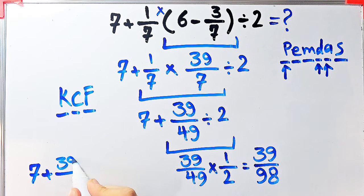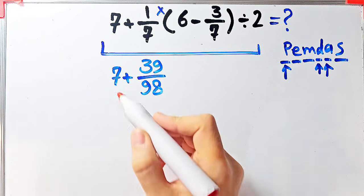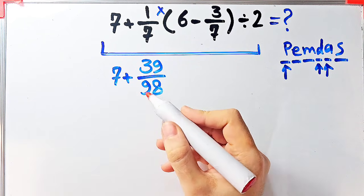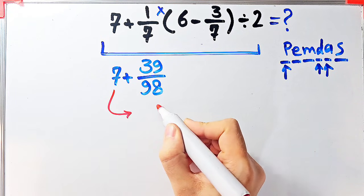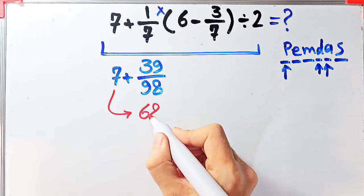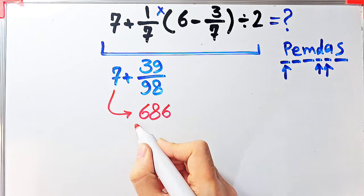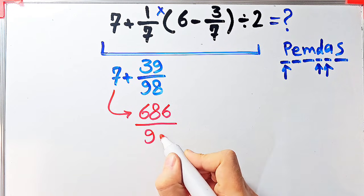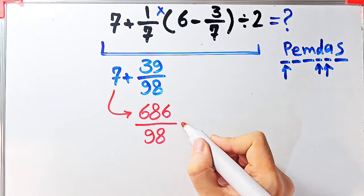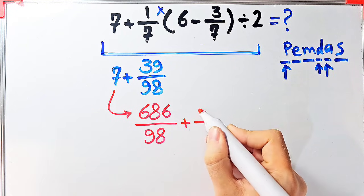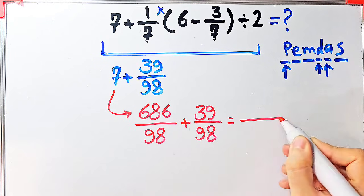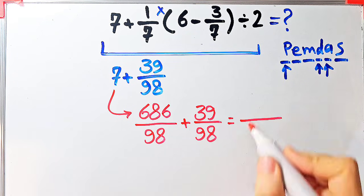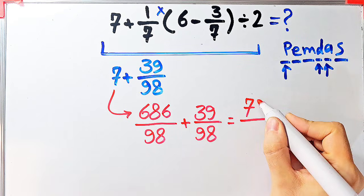Let's simplify this step by step. Since the denominator of this fraction is ninety-eight, we can write seven as six hundred eighty-six over ninety-eight. Now we have six hundred eighty-six over ninety-eight plus thirty-nine over ninety-eight. The final answer of this question equals seven hundred twenty-five over ninety-eight.